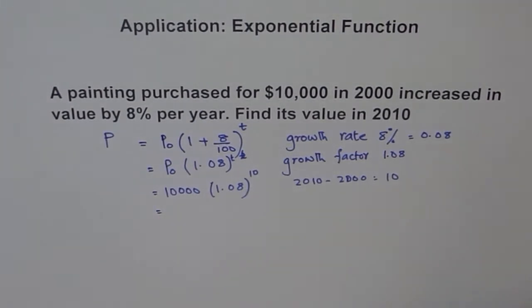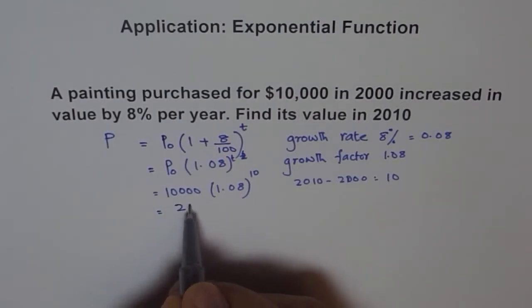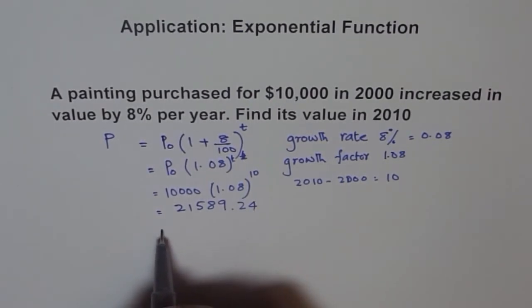Now that is our final price. So for this we need to use calculator. Let's use calculator and find our answer. Let's calculate it. So it is 10,000 times within bracket, I will write 1.08 to the power of 10. So 1.08 to the power 10. So we can write this as $21,589.